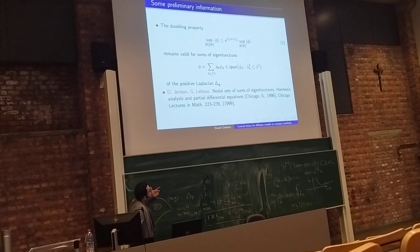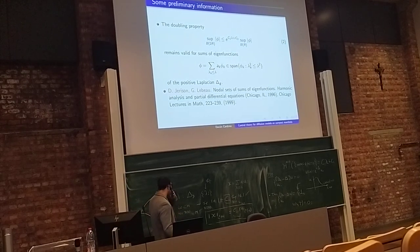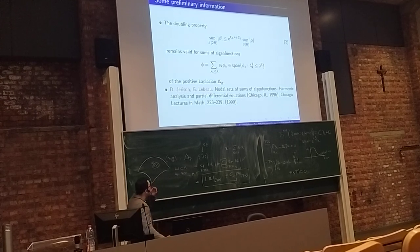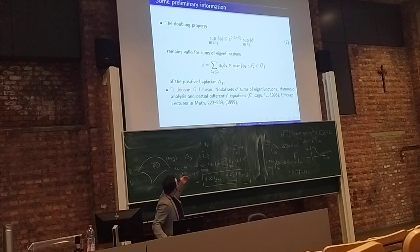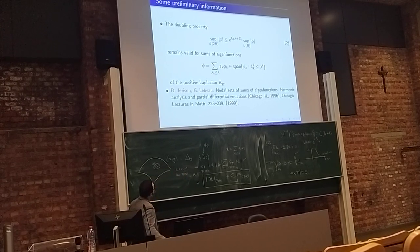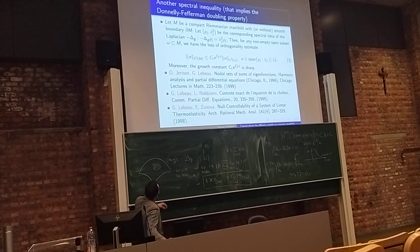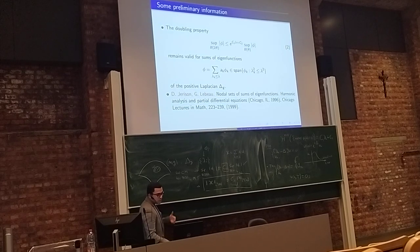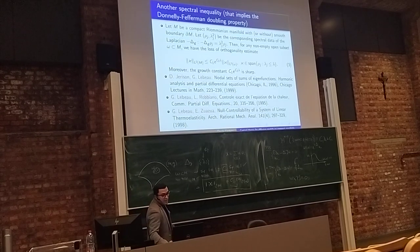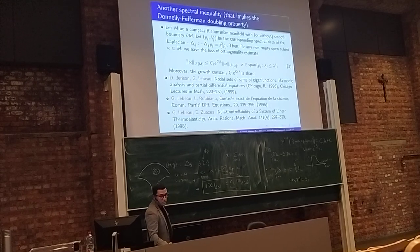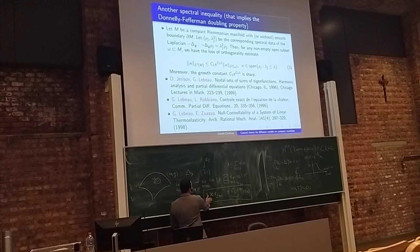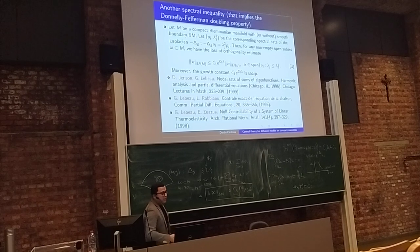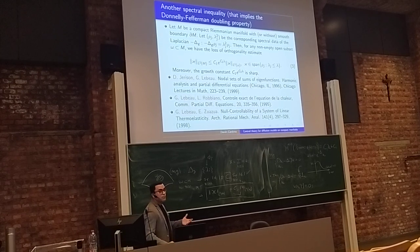With the validity of this spectral inequality you can estimate the Hausdorff measure of the nodal set of an eigenfunction — the set of points where the manifold function is zero. Jerison and Lebeau, David Jerison from MIT and Gilles Lebeau in France, proved that the validity can be extended to the case of sums of eigenfunctions, with this application in particular — the L2 norm estimate for sums of eigenfunctions.